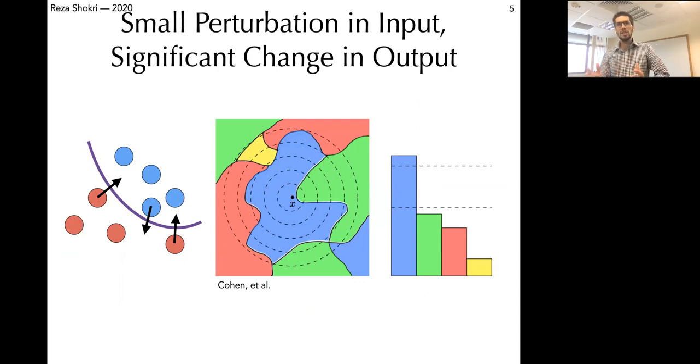During the test time, because of the complicated decision boundaries and complex models such as neural networks, by finding a very small change in a particular direction in the data, you would be able to cross the boundary and force the model to misclassify the data to bypass, for example, some security checks.